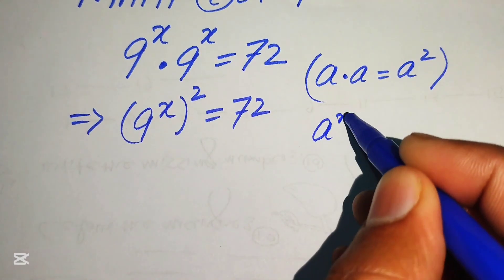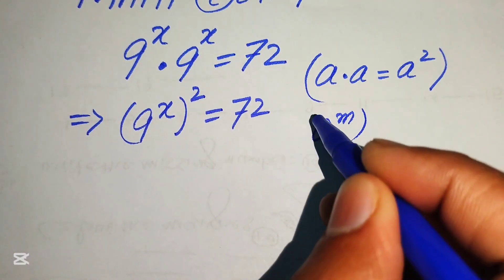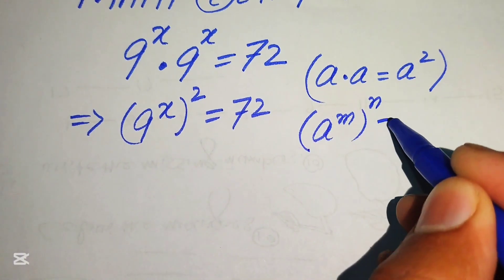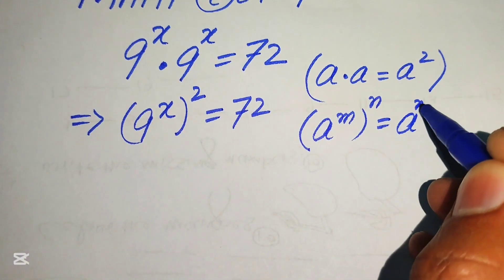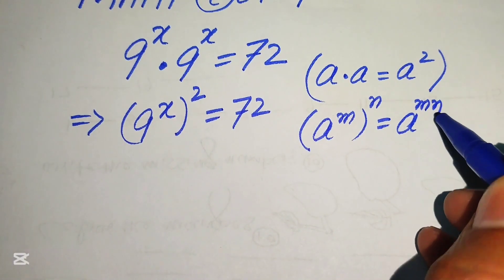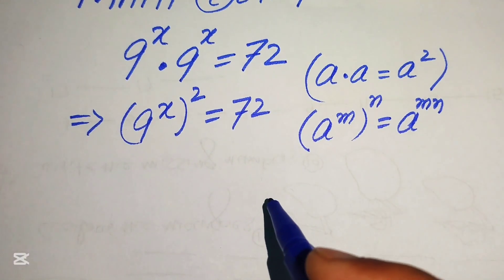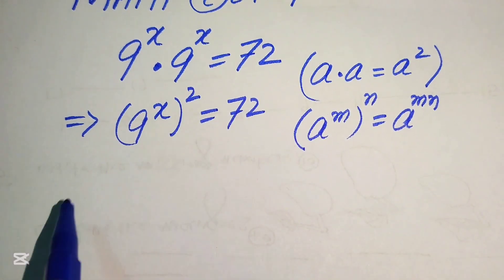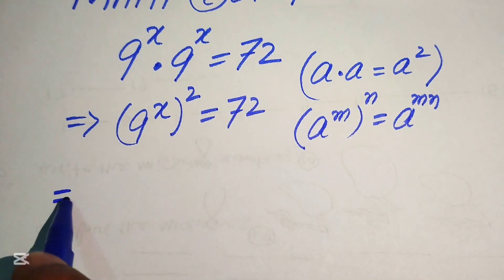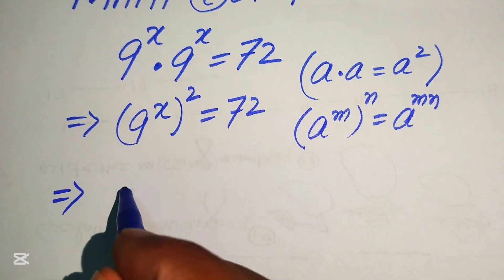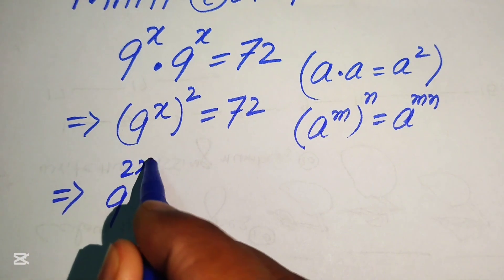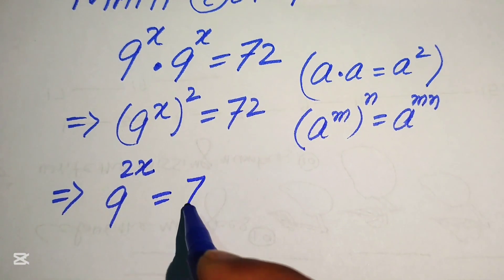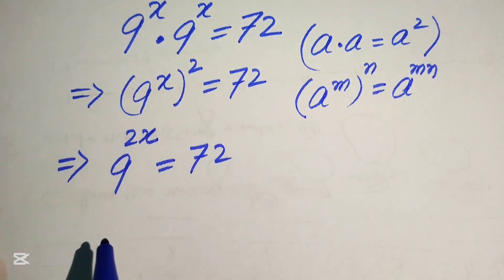Next, we apply the exponent law: a to the power of m to the power of n equals a to the power of m times n. According to this rule, we multiply the two exponents and write it as 9 to the power of 2x equals 72.